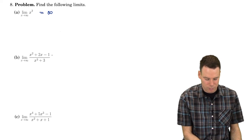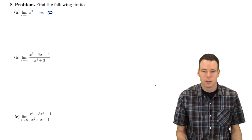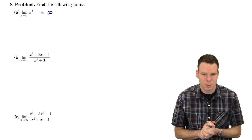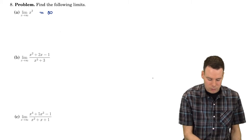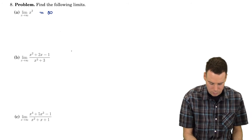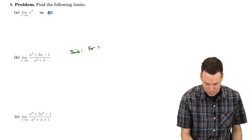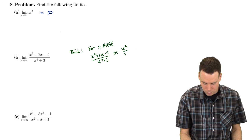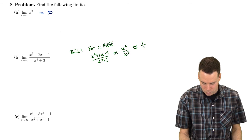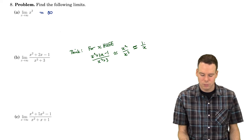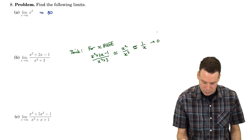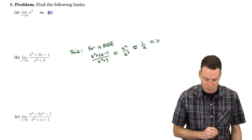What's the limit as x goes to infinity of x squared plus 2x minus 1 over x cubed plus 3? Stop and think about this for a second. There's a quadratic polynomial on top, a cubic one on the bottom, and x is getting really big. What's the dominant term on top? x squared. For x huge, we have x squared plus 2x minus 1 over x cubed plus 3, which is roughly x squared over x cubed, which is the same as 1 over x. So when x is really huge, this ratio is roughly 1 over x, and that's going to 0. So I expect this limit to be 0.